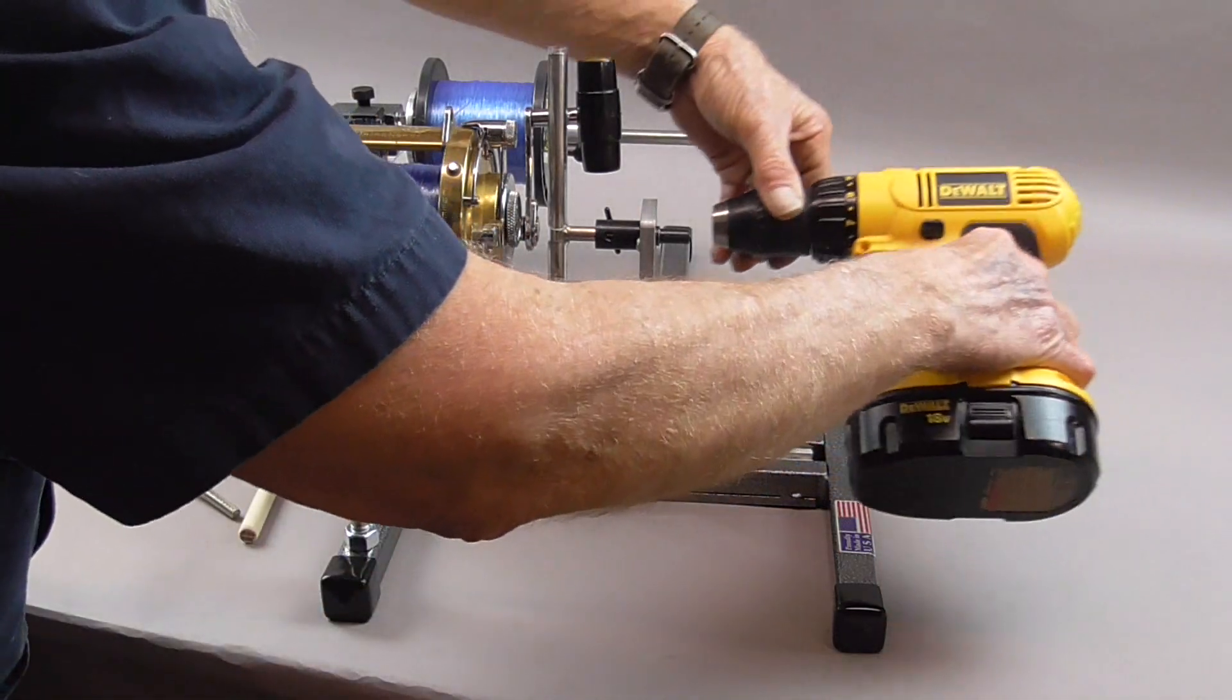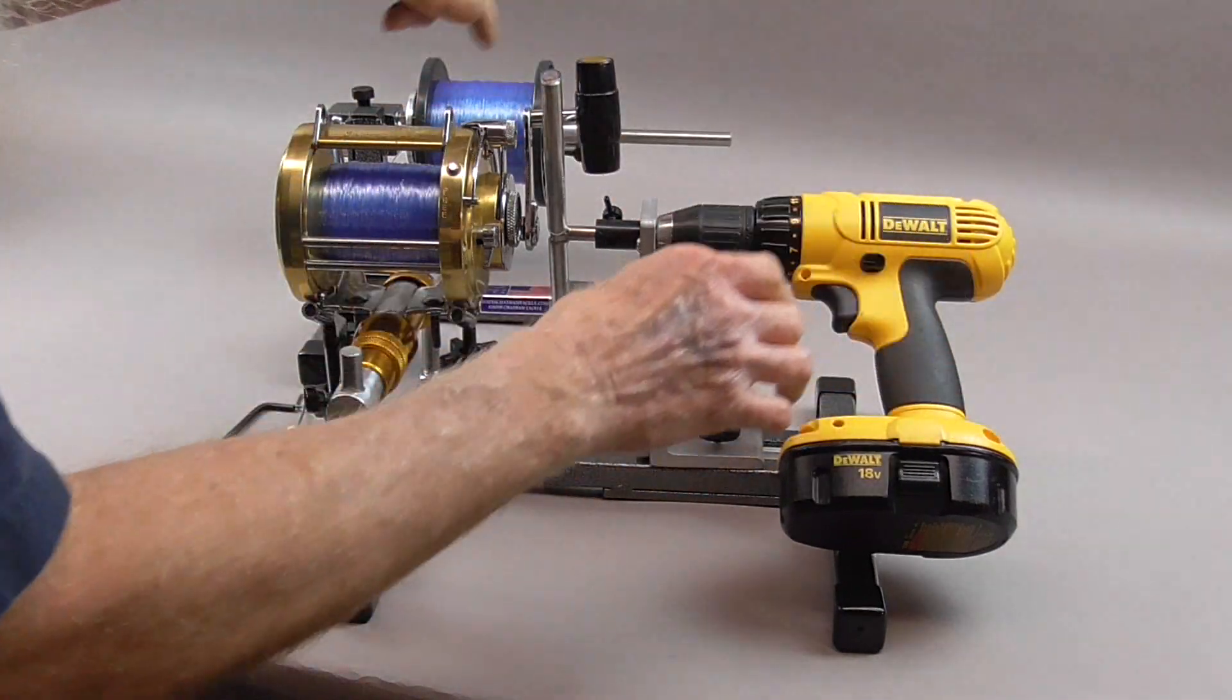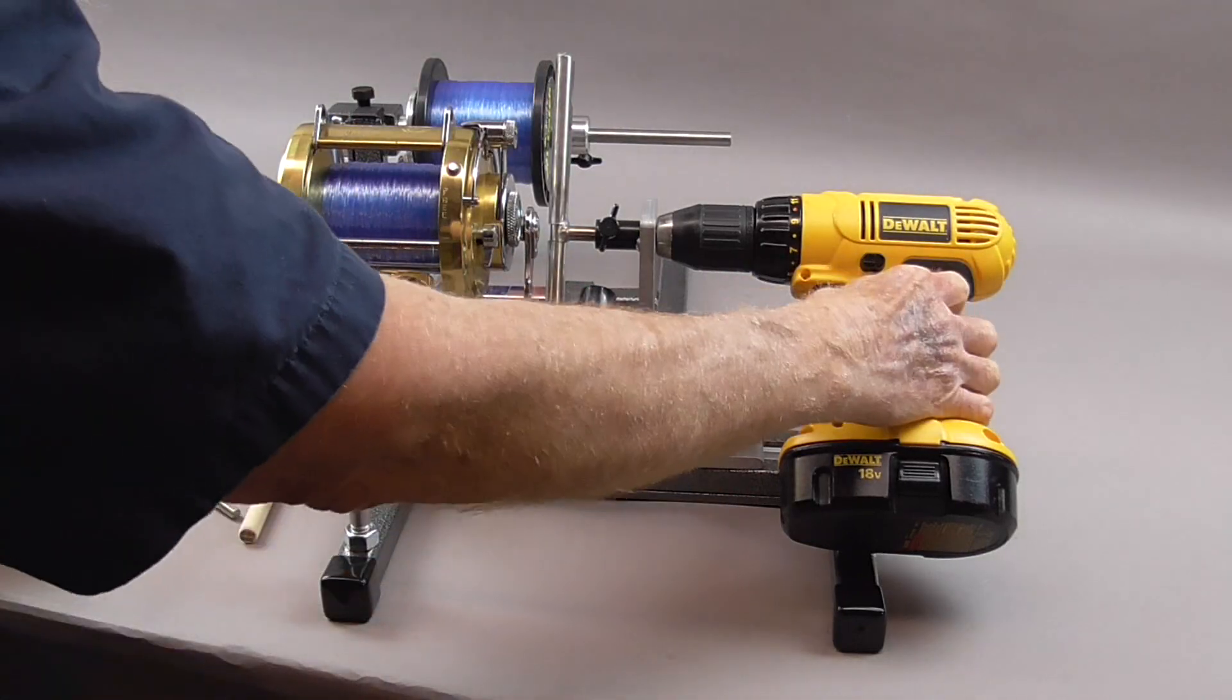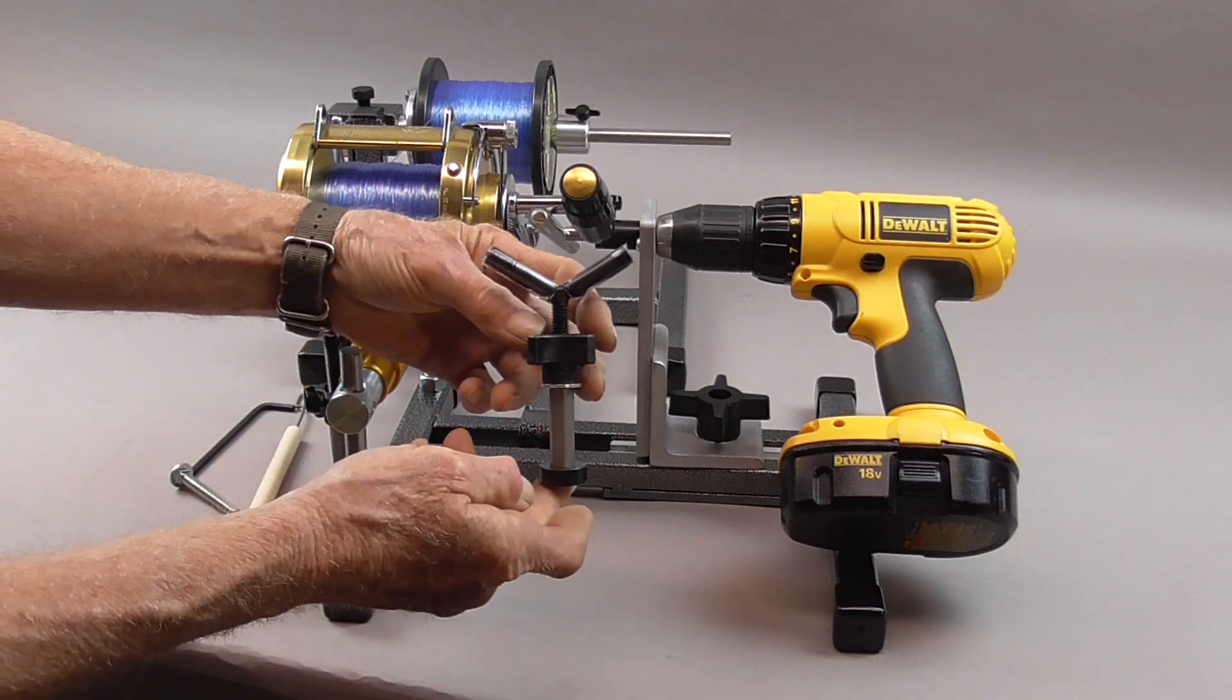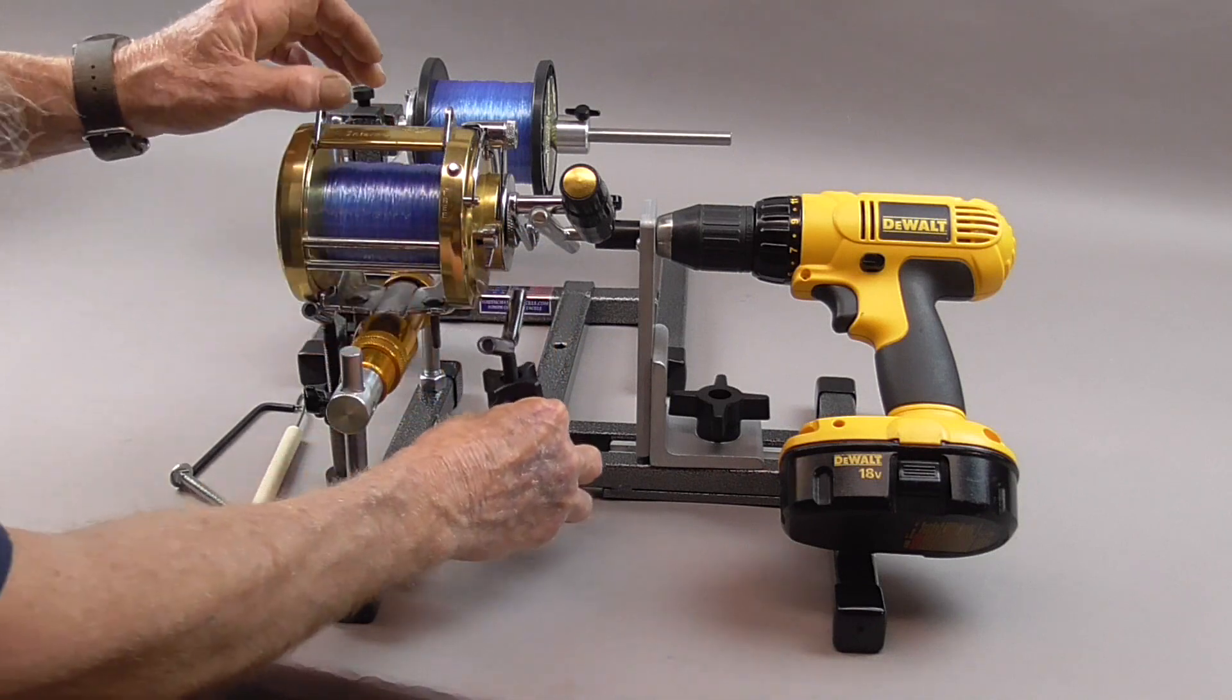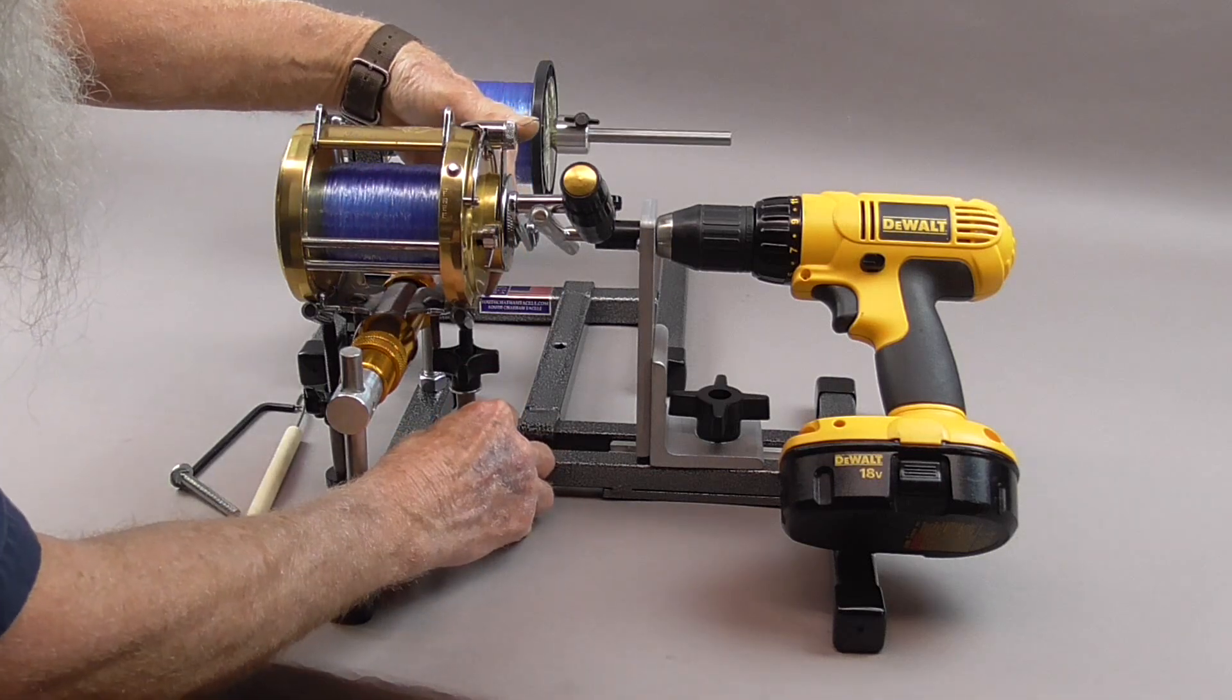So we have our adjustment tools here, little levelers. They move up and down, adjustable. Stick those underneath the reel, center them up. It helps eliminate the wobble.